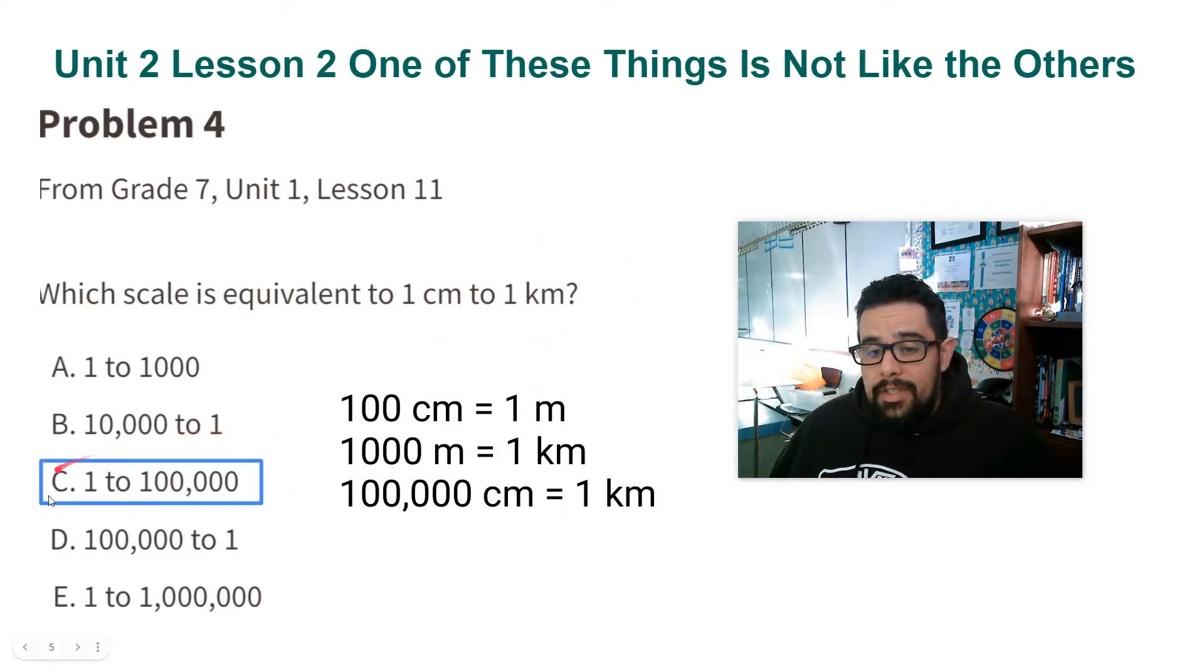So that's going to give us scale C. This is saying one centimeter on your drawing is going to represent 100,000 centimeters in real life, which is one kilometer.